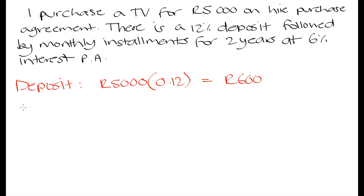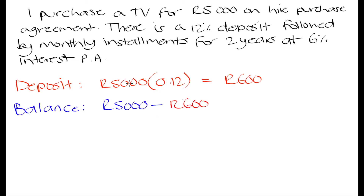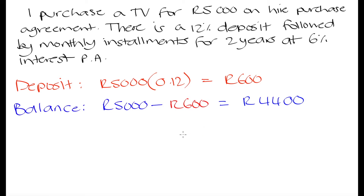R600 is how much you are going to have to pay upfront at the point of purchase. The balance is what we still owe to the shopkeeper for this TV. We've paid R600, but we still owe R5,000 minus R600, which equals R4,400. Since this is a hire purchase agreement, we've agreed that this R4,400 is going to be paid back over 2 years in monthly installments. And since this is effectively a loan, you are going to have to pay 6% interest per year on this balance — using simple interest.